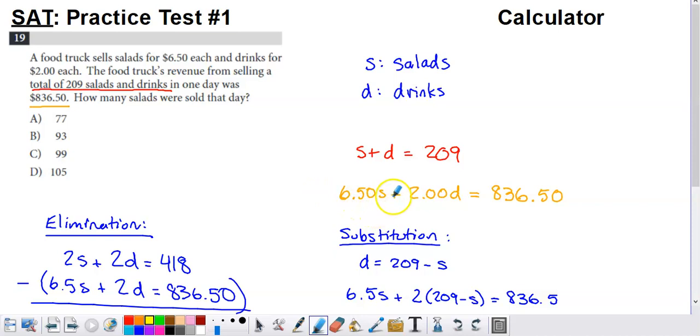And then you would add on to that the amount of money they brought in by selling the drinks by taking the price of a drink, which is $2, times the number of drinks they sold. That total amount brought in has to equal the total amount that they gave us, $836.50.